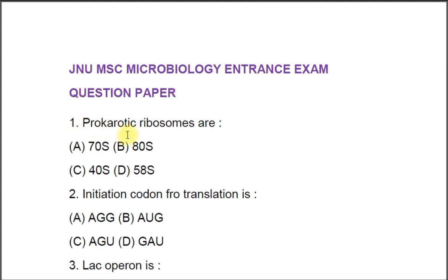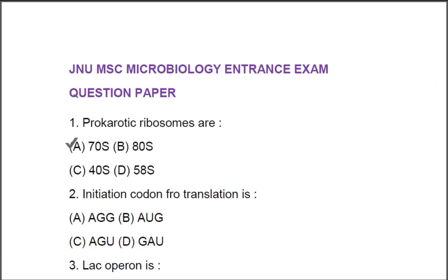Question 1: Prokaryotic ribosomes are A) 70S, B) 80S, C) 40S, D) 58S. The correct answer is A, 70S. Question 2: Initiation codon for translation is A) AGG, B) AUG, C) AGU, D) GAU. The correct option is B, which is AUG.